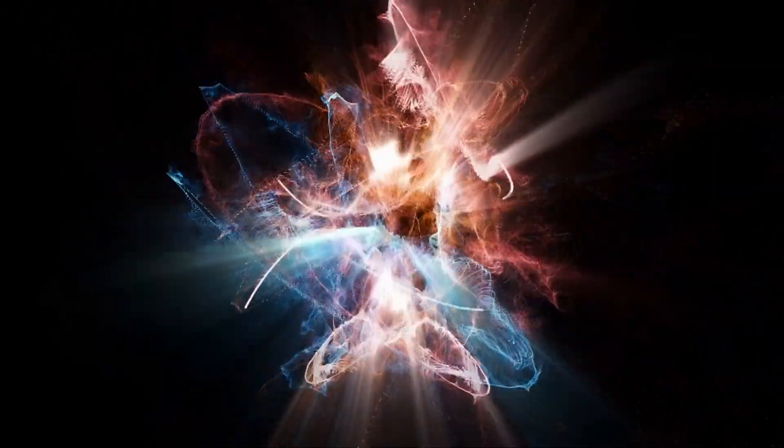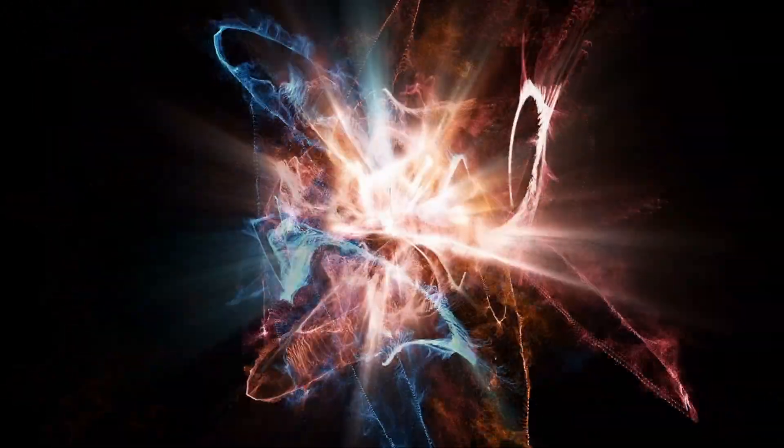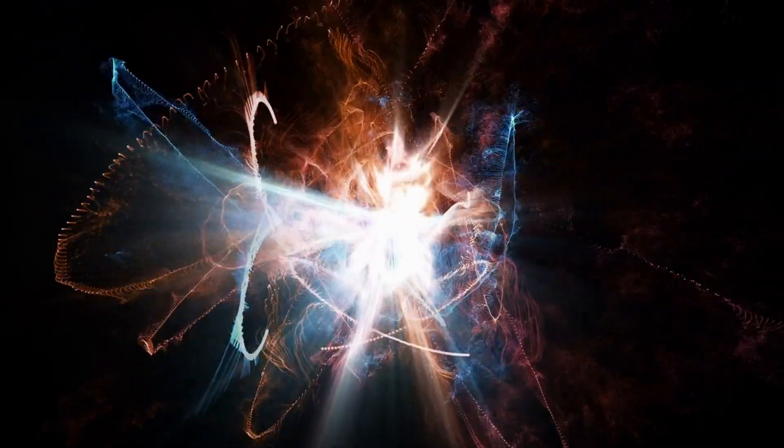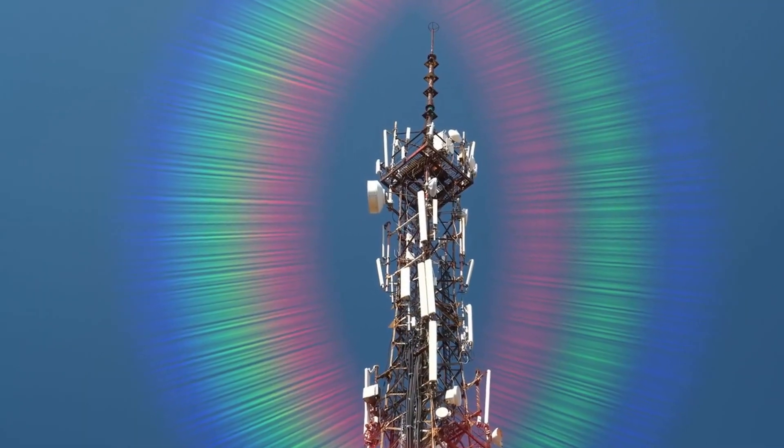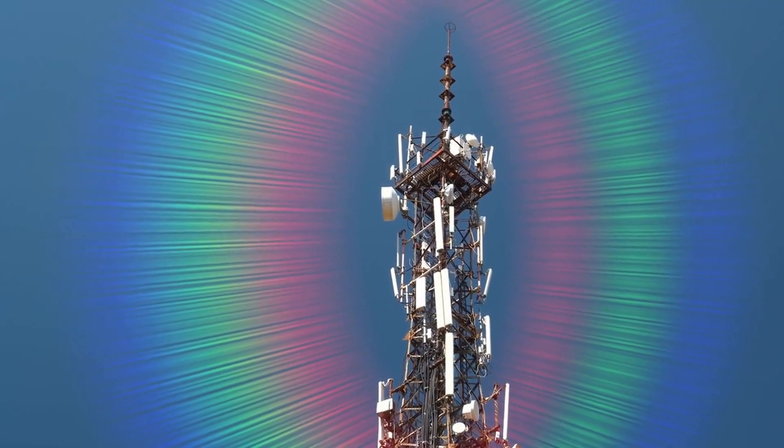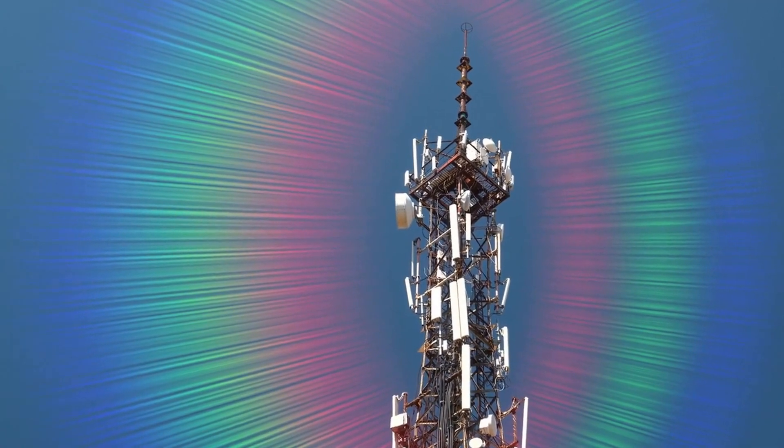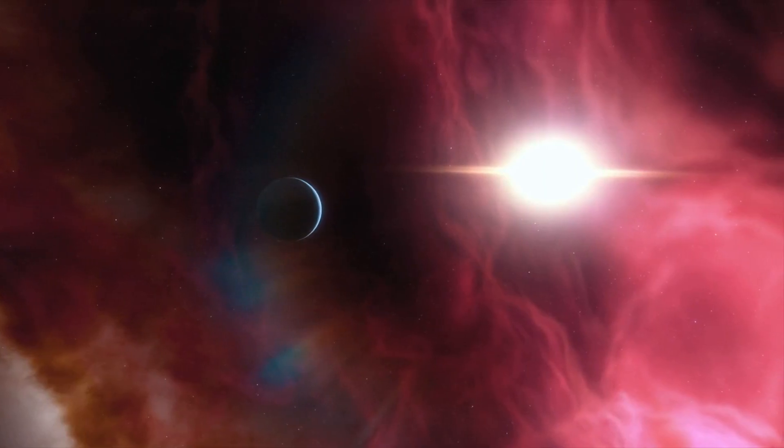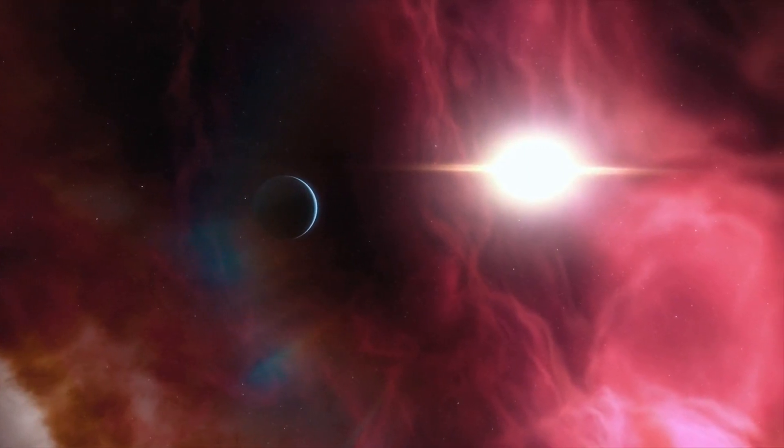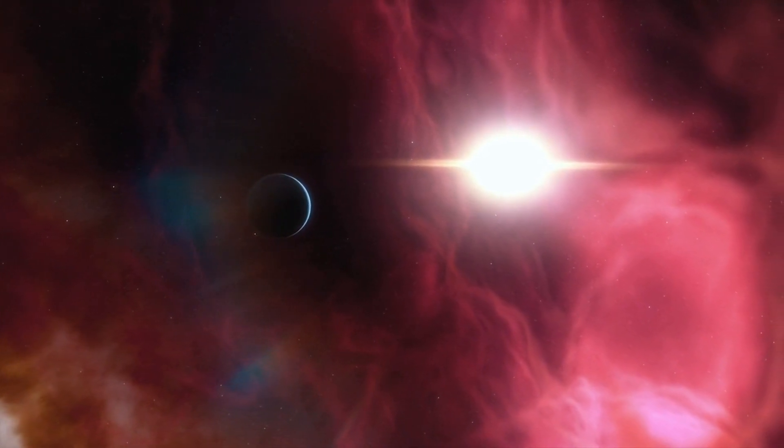Magnetic reconnection releases energy in the form of flares and coronal mass ejections, CMEs. Flares are sudden bursts of energy that release radiation across the entire electromagnetic spectrum. CMEs are huge bubbles of plasma and magnetic field that are ejected from the sun's surface into space.